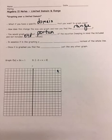We do that by looking at the graph and looking at our domain, whether it's open or closed. So in essence, it is like graphing a line segment instead of the whole line. Once it is graphed, you find the range just like any other graph.